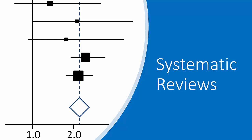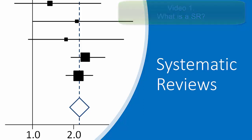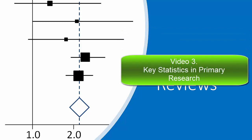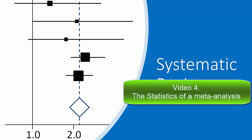This video series will start by introducing you to what a systematic review is, and then in subsequent videos I will look in depth at an actual published systematic review. We will also need to understand the statistics you will come across in the primary studies, and the statistics specific to a meta-analysis, which is very often the last stage of a systematic review.